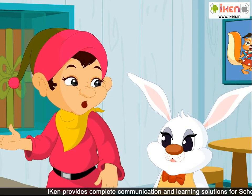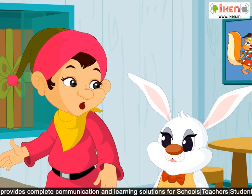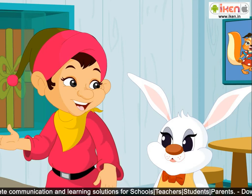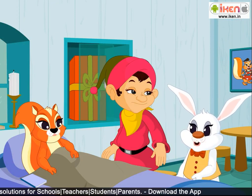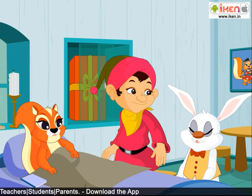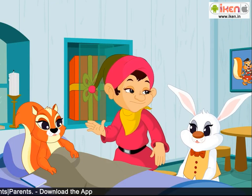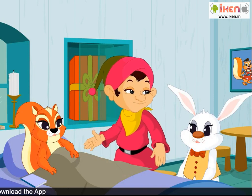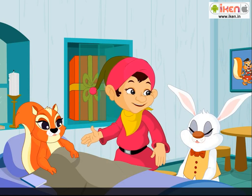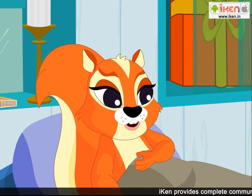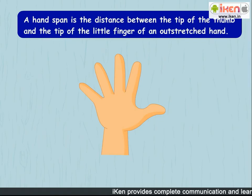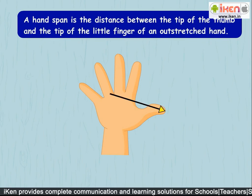One method is to use your hand. Let us find two objects that are a little far apart from each other. I know — let us find the distance between Amber's bed and his toy cabinet. Good idea, Bunny! Let us use hand spans to measure the distance. A hand span is the distance between the tip of the thumb and the tip of the little finger of an outstretched hand.